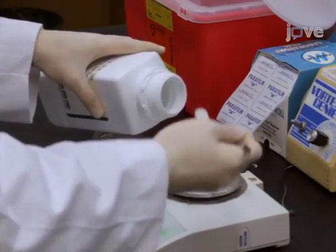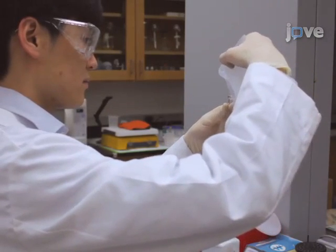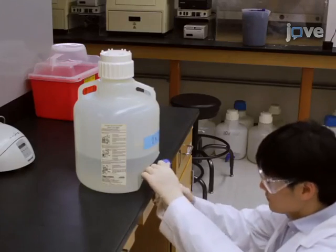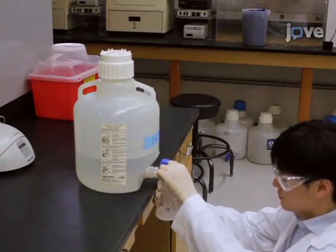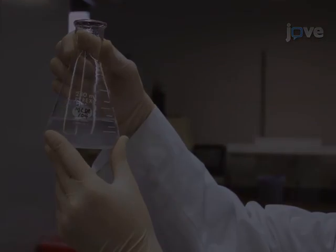To begin the procedure for making a gel, weigh out the appropriate mass of agarose into an Erlenmeyer flask. Add the appropriate volume of running buffer to the flask. The volume of the buffer should not be greater than one third of the capacity of the flask.